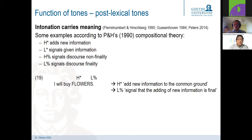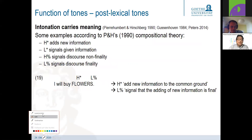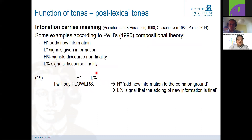There are a few models on the meaning of intonation, but agreement holds that intonational categories not only show phonological distinctions between high and low but also carry sentence and pragmatic meaning. Briefly, a high star adds new information, a low star signals given information, and boundary tones signal the relation of that utterance to the surrounding discourse. So in 'I will buy flowers,' the high star adds new information to the common ground and the low percent signals that this new information is final for listeners to take into their common ground.